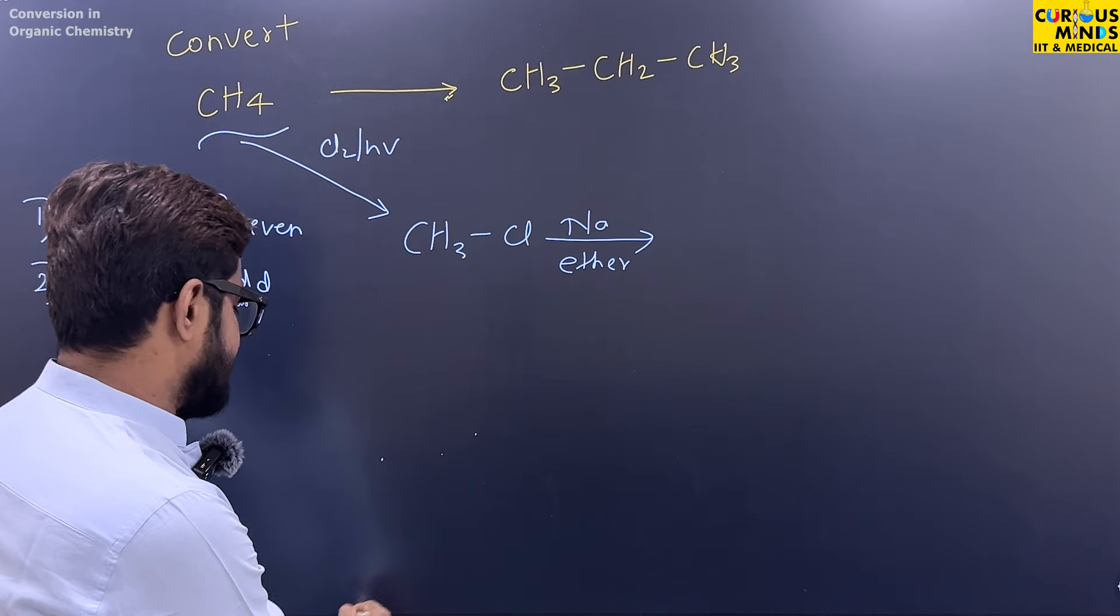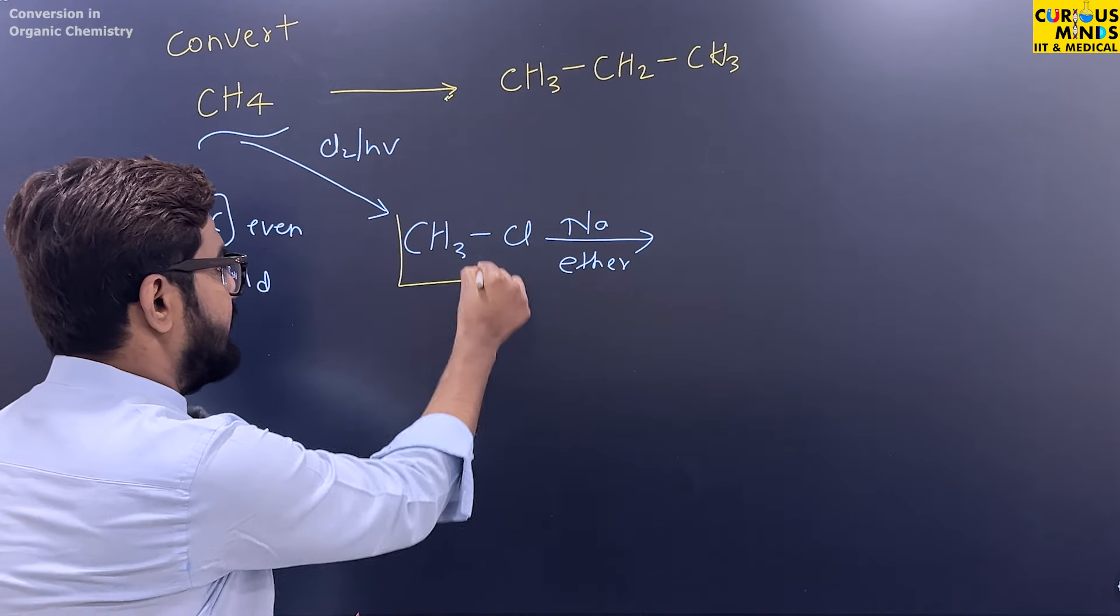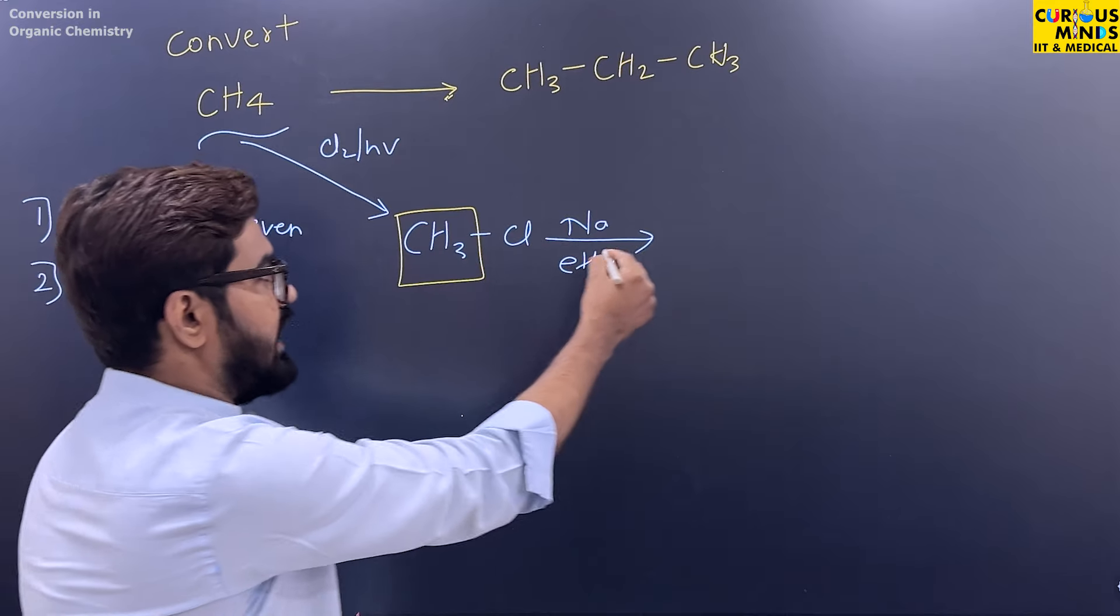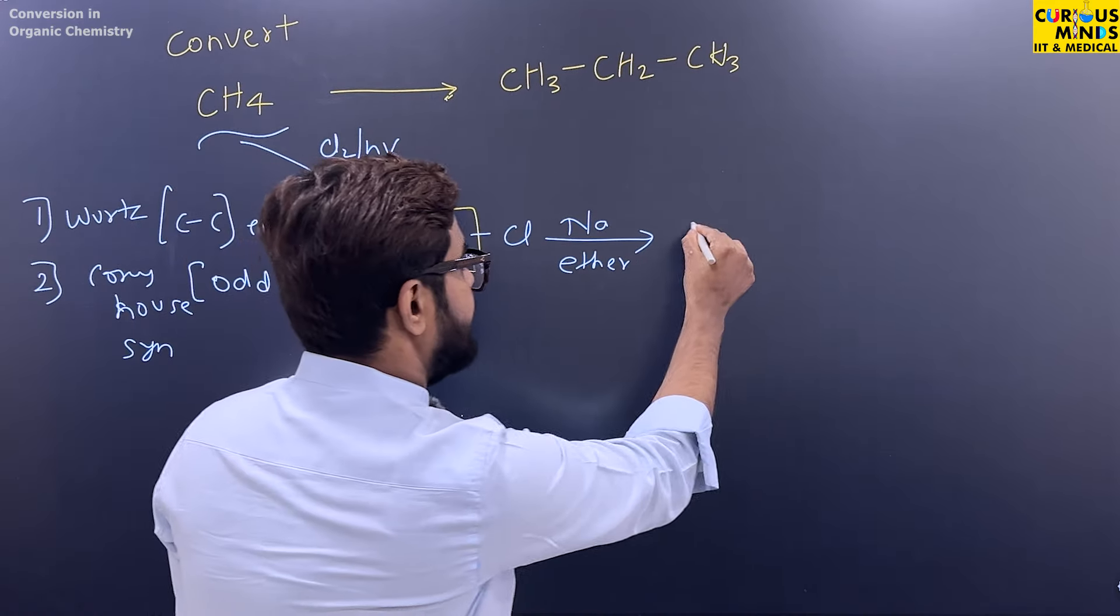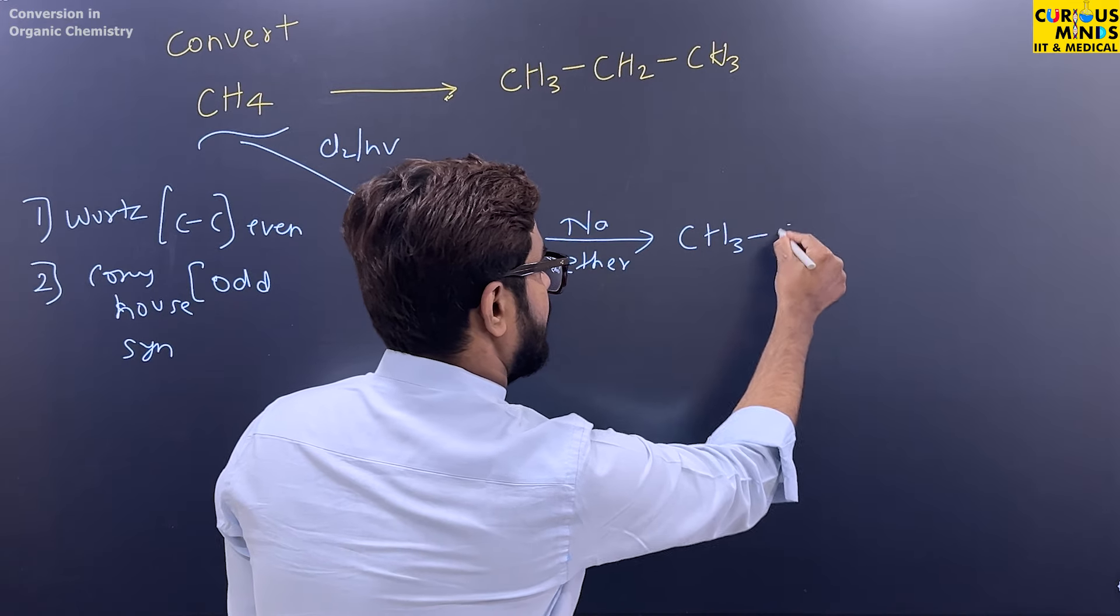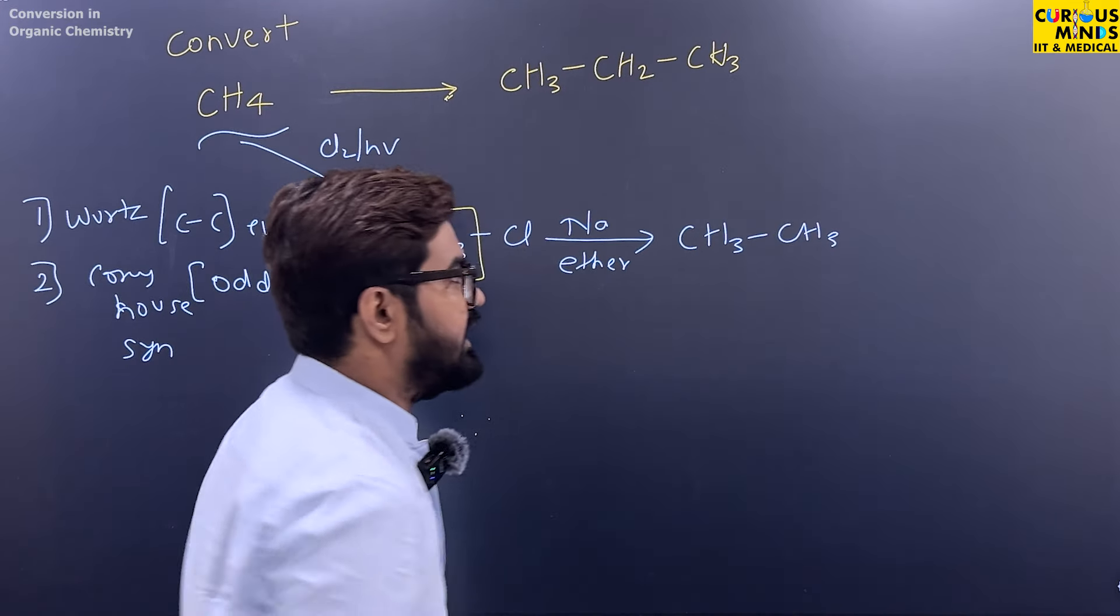So Wurtz reaction, what will happen? CH3 will double. So the product that you will get here is ethane. You have to get ethane.